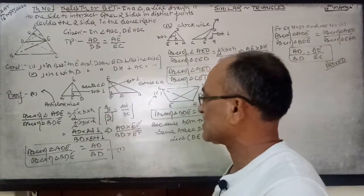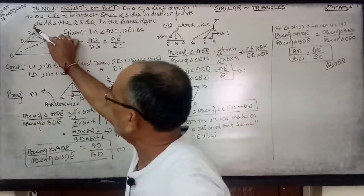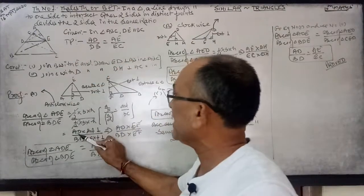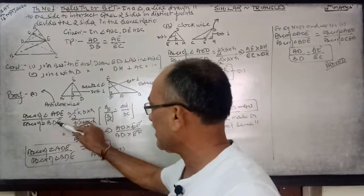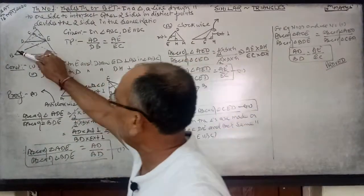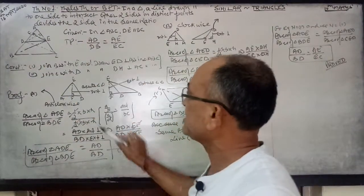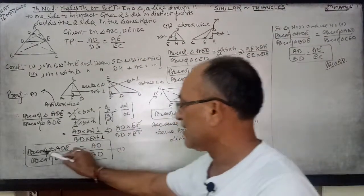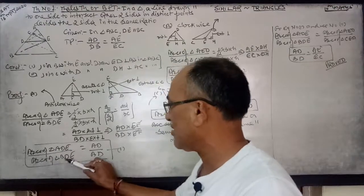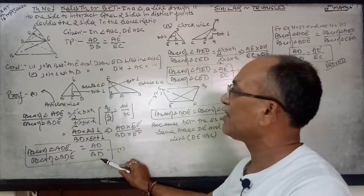Half will be cancelled with this half. So base for this ADE is AD and EF is internal perpendicular. Over in triangle BDE, BD is base and this EF will work as external perpendicular. So EF will be cancelled. Area of triangle ADE over area of triangle BDE equals AD over BD.